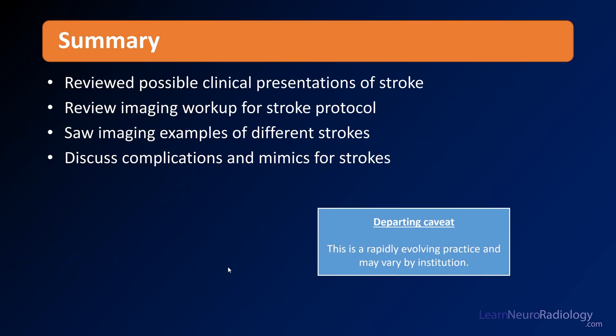In summary, in this stroke series we've looked at different possible clinical presentations of stroke and reviewed the imaging workup, which can vary across institutions and is a rapidly evolving practice. We saw different strokes intervened upon with various outcomes, and talked about complications and mimics including venous infarct, migraine, and seizure. Be aware of those things and remember the history is really important. Thanks for tuning in — check out the playlist and the entire channel and LernerRadiology.com website for more videos.